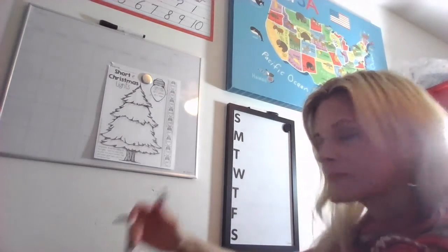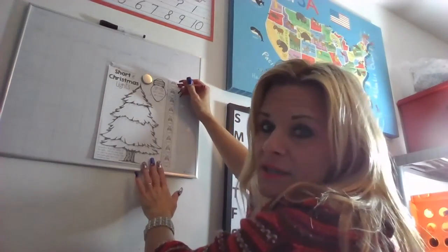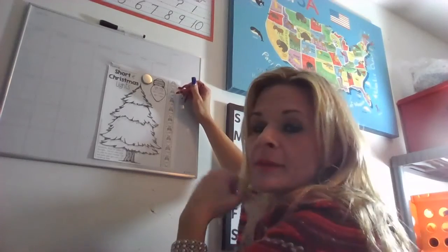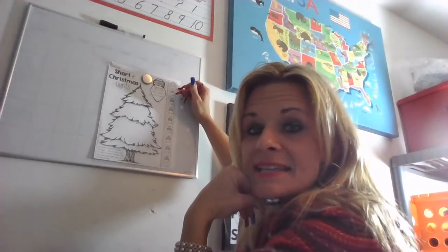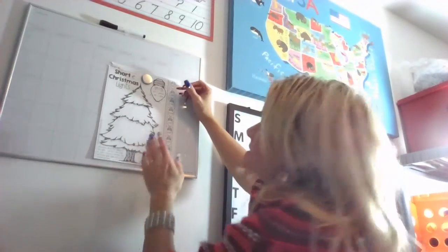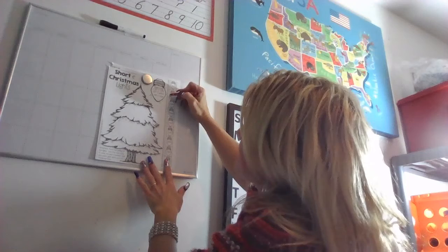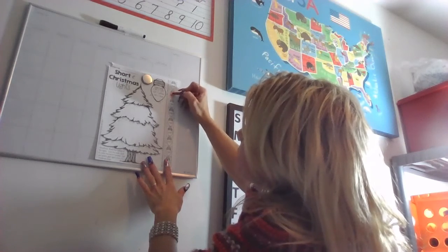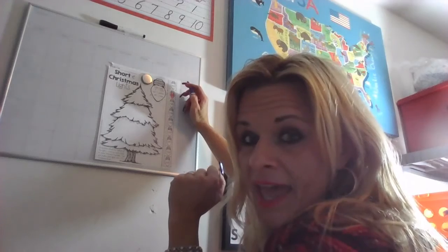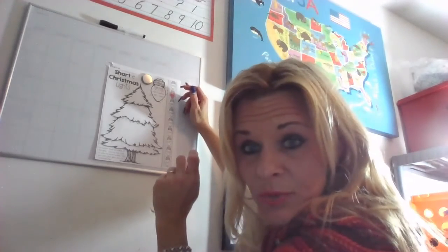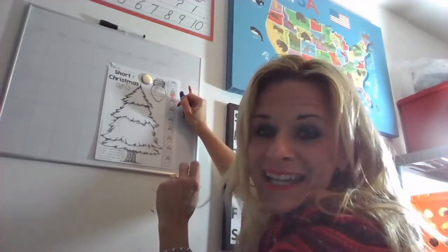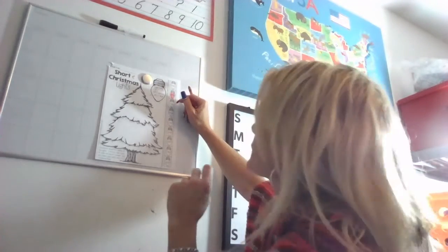Bed — no, I heard a D at the end. I didn't hear an E-T. Set. Okay, Kaden, what do you think? Set has an E-T in it, so we're going to color it red. Hen — Brooklyn, do you hear an E-T? You're right, I heard an N at the end also, so we can't color that one.